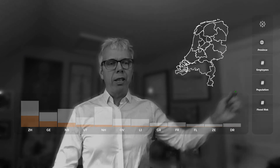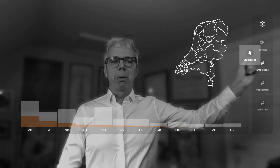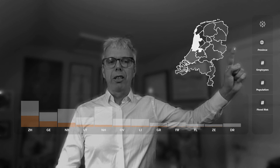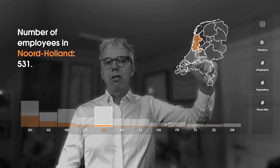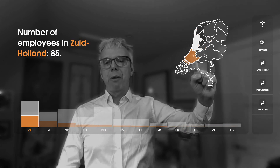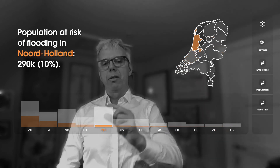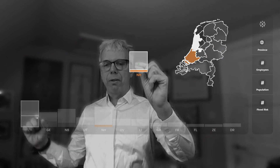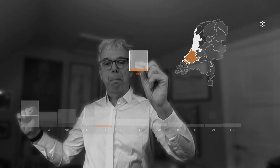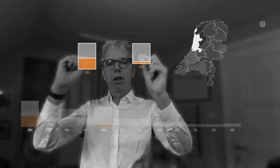Finally, let's see where my employees in the Netherlands are. We can see the big white dot shows that most employees are in North Holland, whereas in South Holland — where the risk was significant — there aren't very many employees.